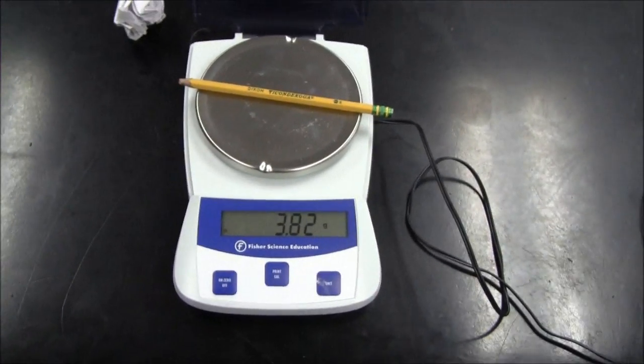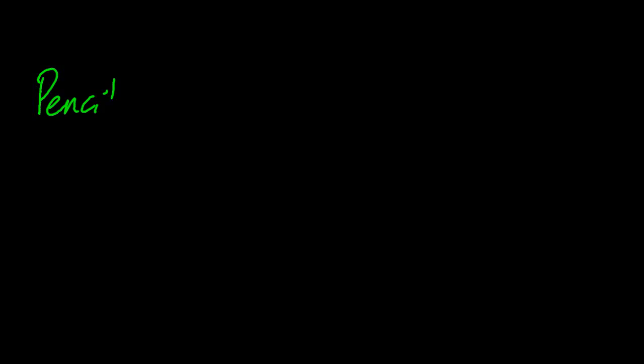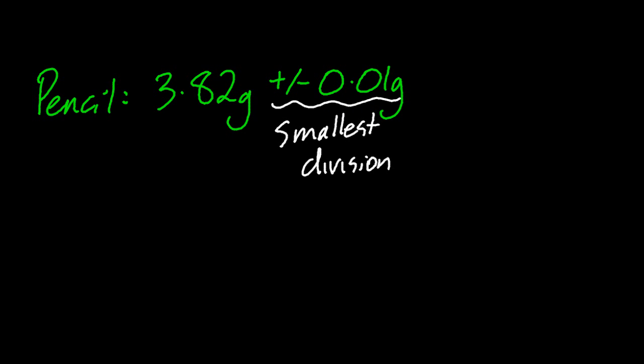And I'll do the maths now to show you the percentage uncertainty. What a handsome devil. Well, my interesting pencil was 3.82 grams, plus or minus 0.01 grams. That's the uncertainty there. It's the smallest division. Are you going to divide by 2? No, because it's digital. Only divide by 2 if it's analog. And that's called the absolute uncertainty.